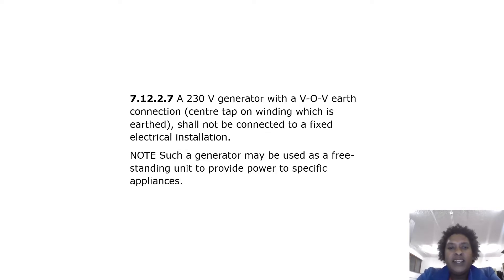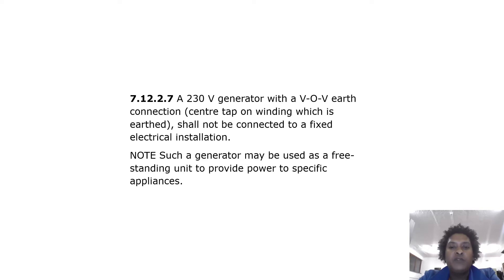A 230 volt generator with a mid-point earth connection — centre tap on winding which is earthed — shall not be connected to a fixed electrical installation. Note: such a generator may be used as a freestanding unit to provide power to specific appliances.